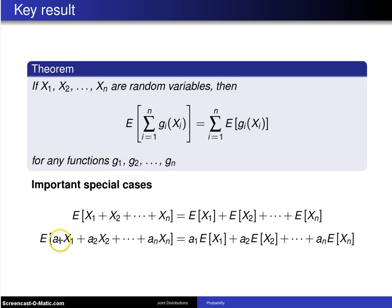Now here are a couple important special cases of this particular result. The first is the expected value of x1 plus x2 plus xn is the expected value of x1 plus the expected value of x2 up to the expected value of xn. In this case, these functions g sub i of x sub i just happen to be x sub i.